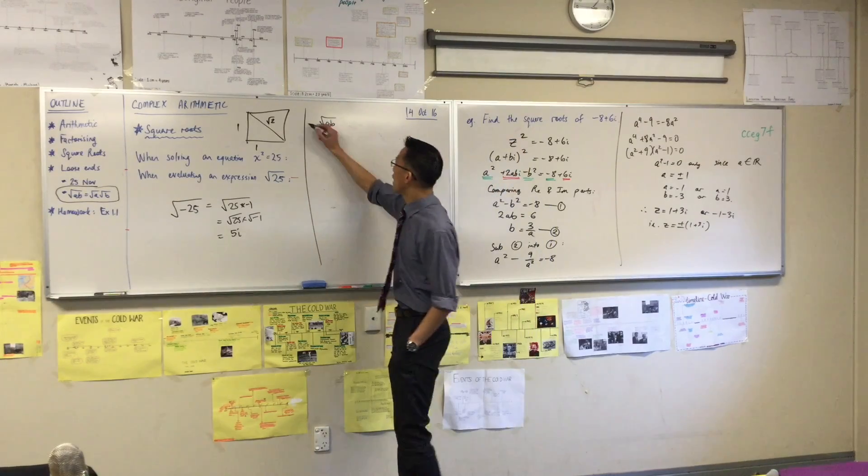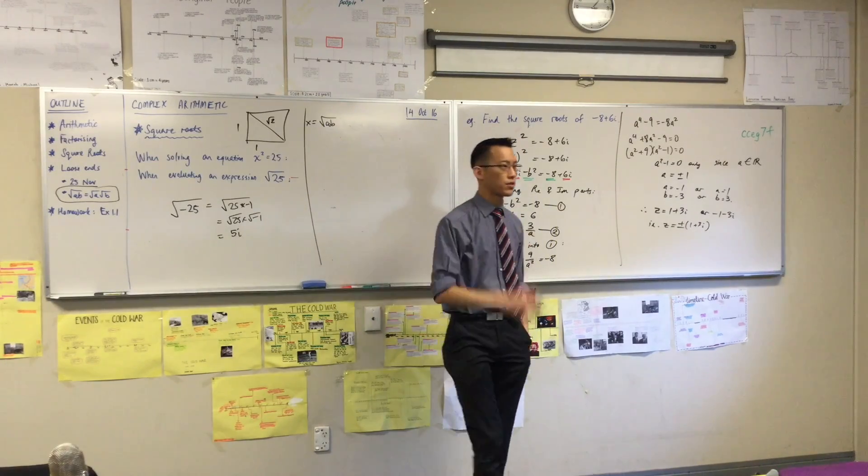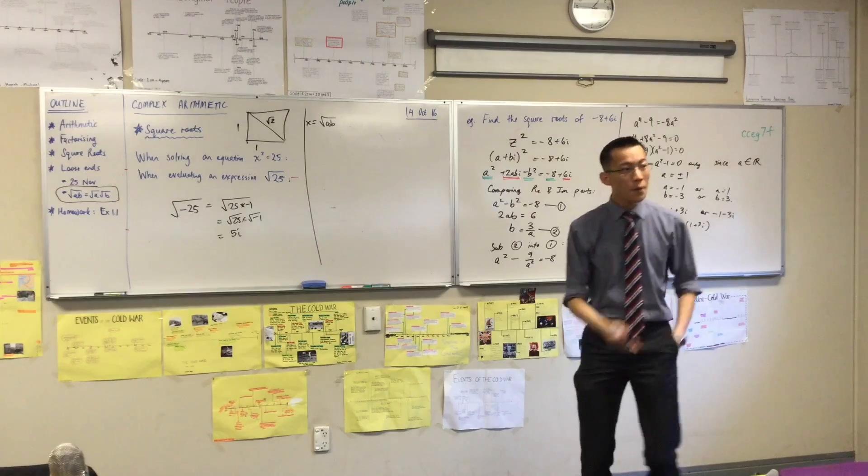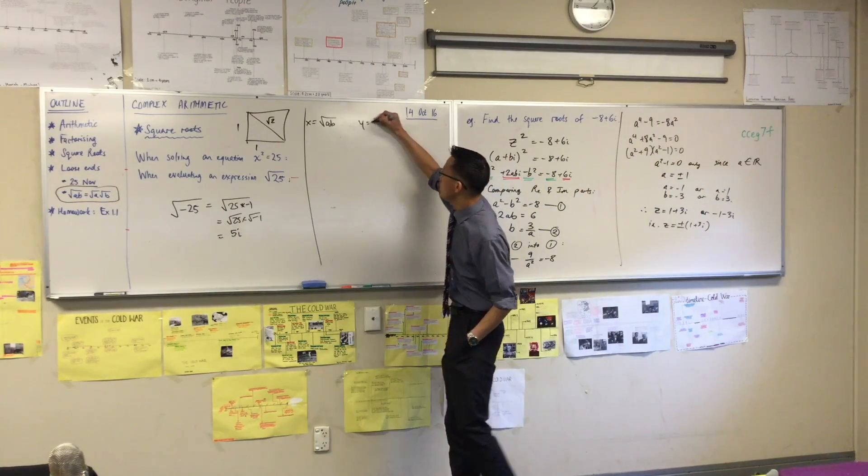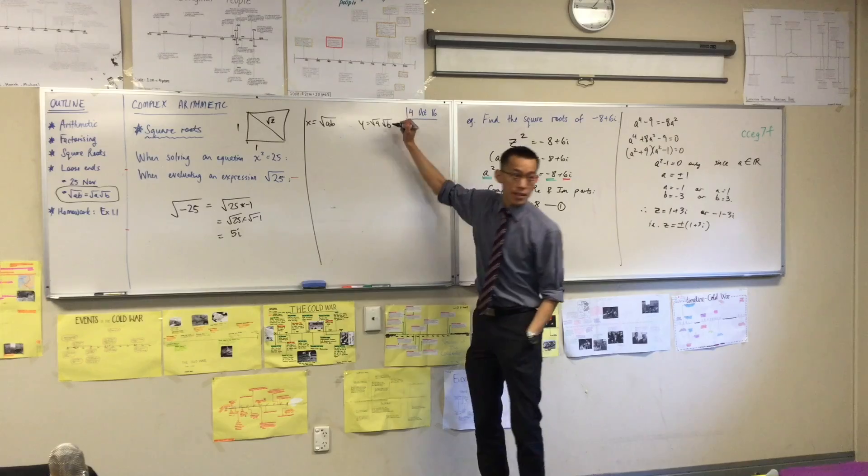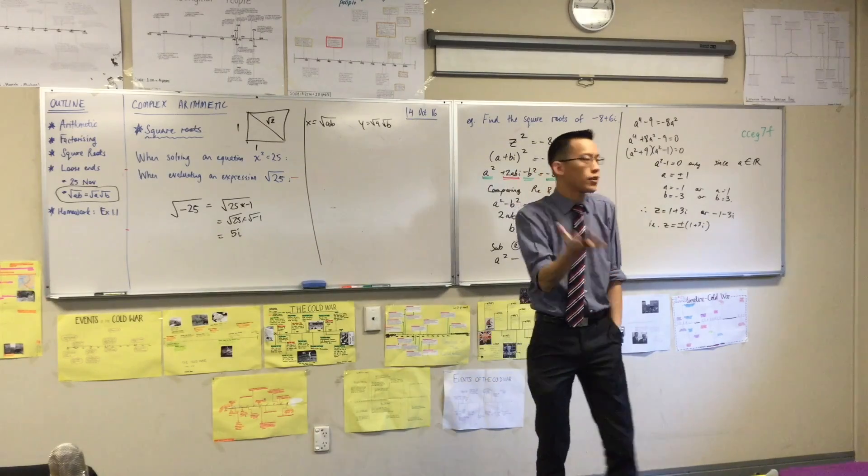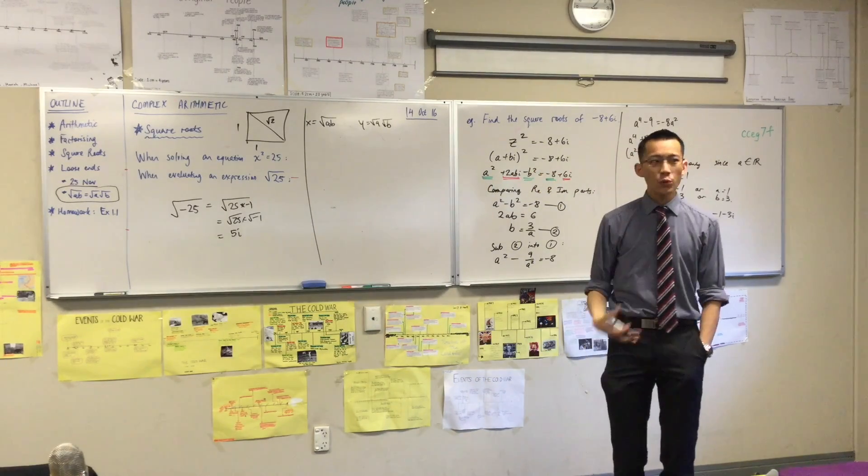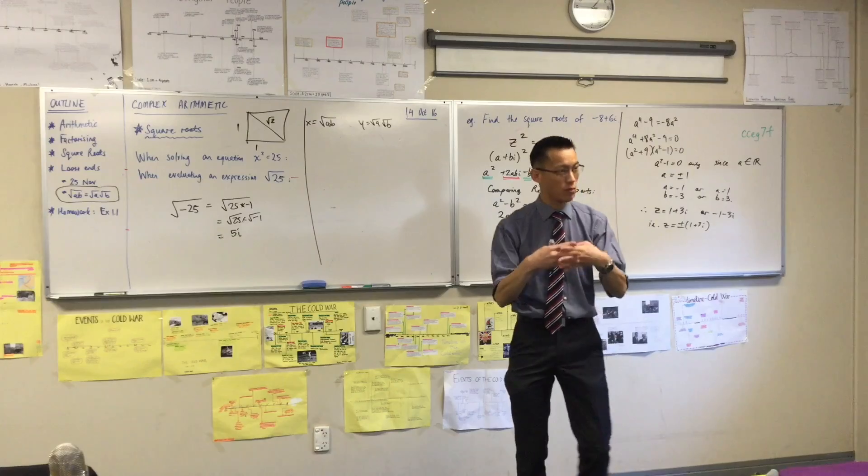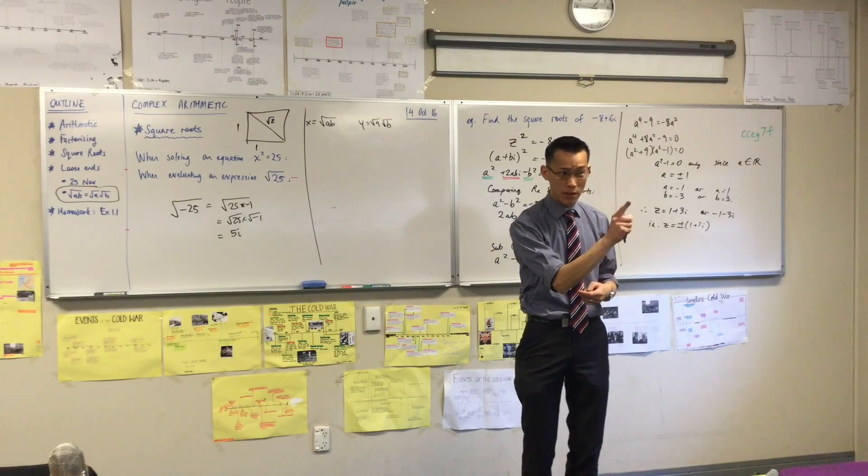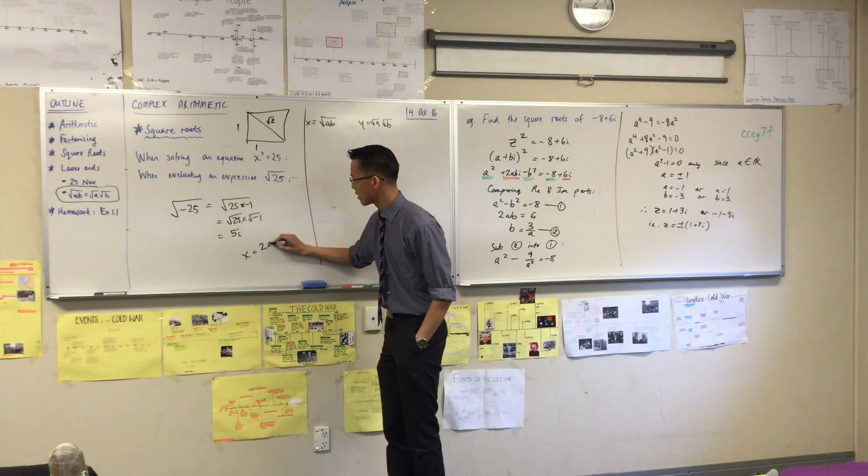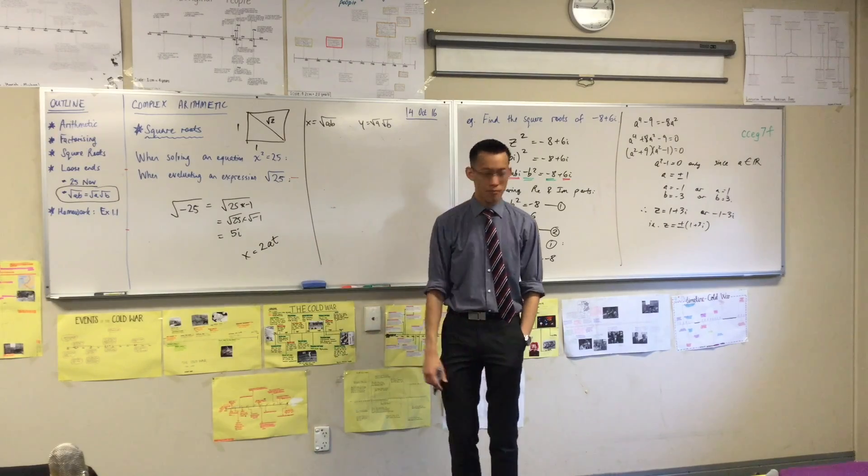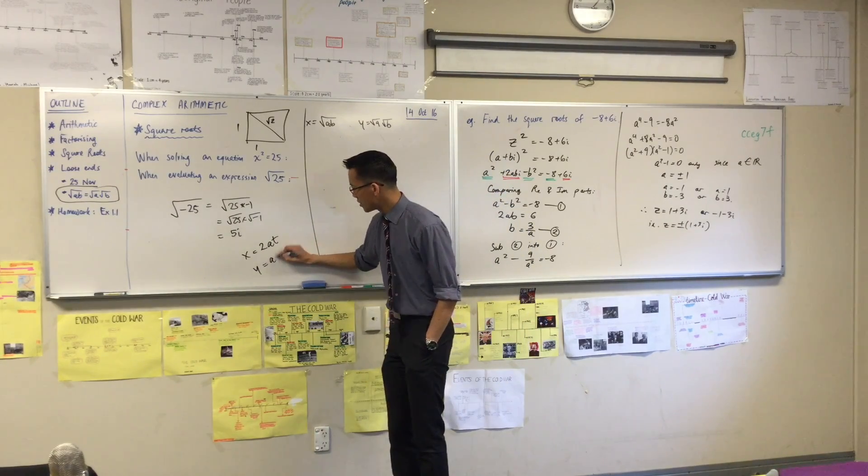Now, the reason why we say this is because if you take the square root of AB. Let's say, what is that number? Well, I don't know what it is. Let's just give it a name. Let's call it X. And then you say, well, what about root A and root B separately? What is that? Well, imagine you're in a universe where you don't know that these things are the same.